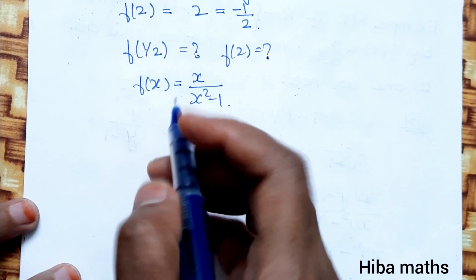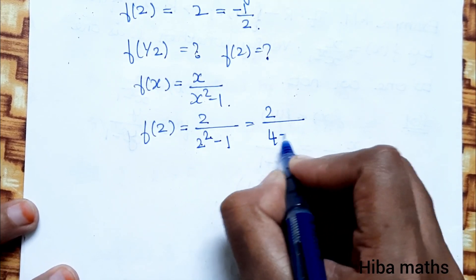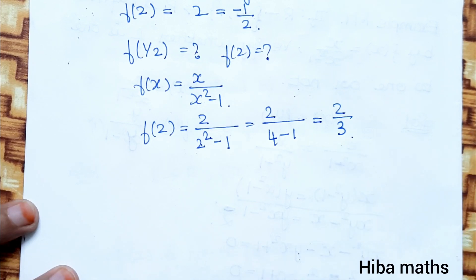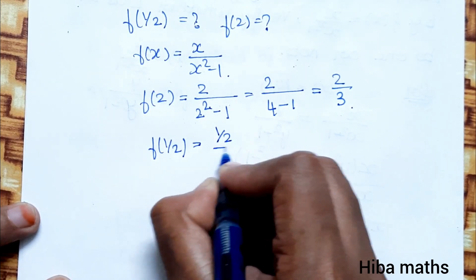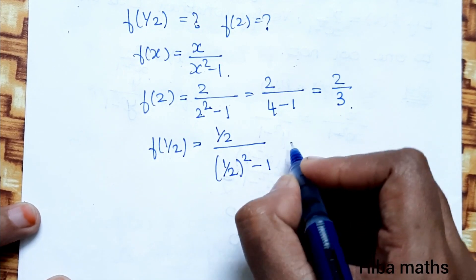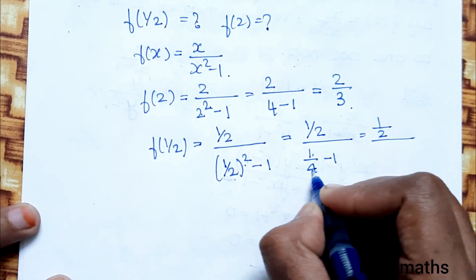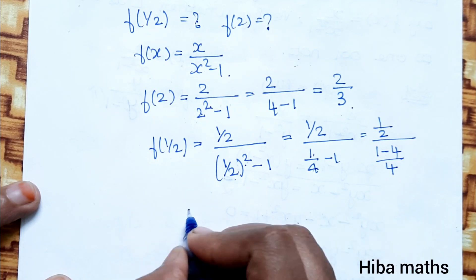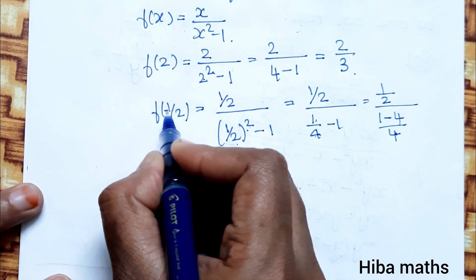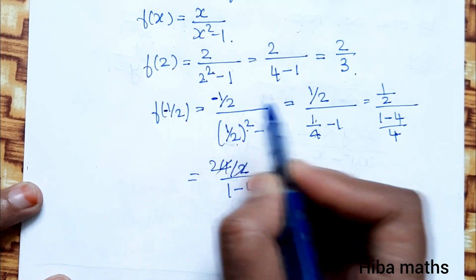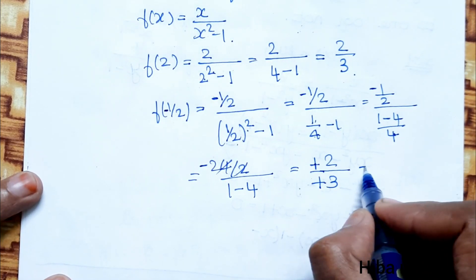Let us substitute and verify. Compute f(2): 2 divided by (2 squared minus 1) = 2 divided by (4 minus 1) = 2 by 3. Now compute f(minus 1/2): (1/2) divided by ((1/2) squared minus 1) = (1/2) divided by (1/4 minus 1) = (1/2) divided by (minus 3/4). Multiplying reciprocal gives minus 4 by 2 divided by 3, which simplifies to minus 2 by 3. Wait — minus minus gives plus, so 2 by 3.